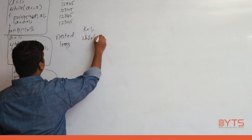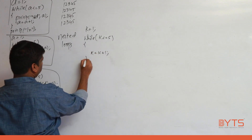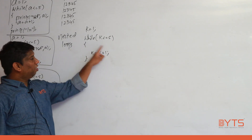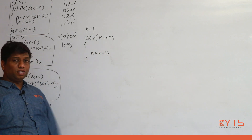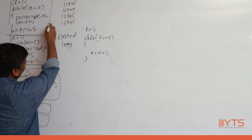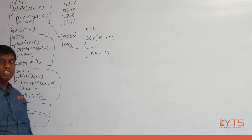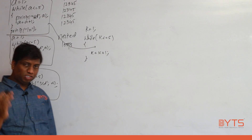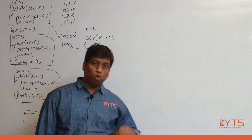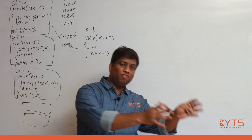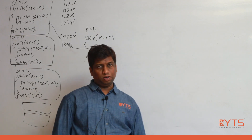For example, if you write k = 1, while k <= 5, k = k + 1, any printf inside executes five times. If you write three printfs, all three execute five times. If we substitute the inner loop code there, that code also executes five times. That is the concept of nested loops: whenever a loop itself is repeated multiple times, go for a nested loop.